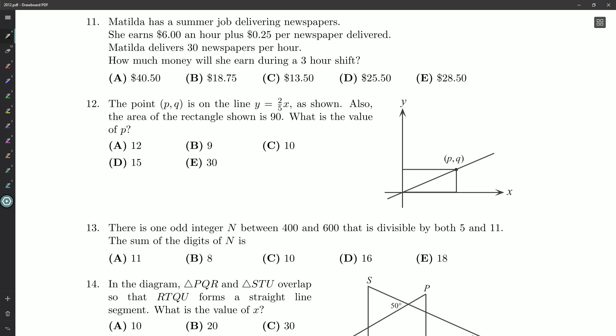Hello, everyone. I hope you're all doing well and you're ready for question 12 on our 2012 Cayley Math Contest. The point (P, Q) is on the line y equals 2/5 x as shown. Also, the area of the rectangle shown is 90. What is the value of P?